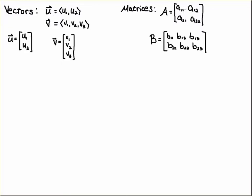So this is A in the first row first column, A first row second column, A second row first column, A second row second column. Likewise for this matrix B: first row first column, first row second column, first row third column.